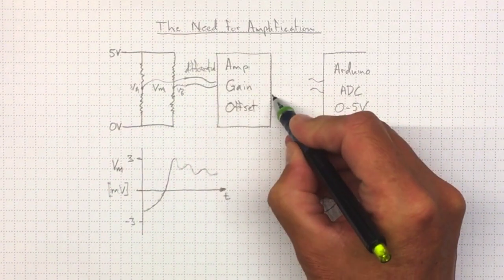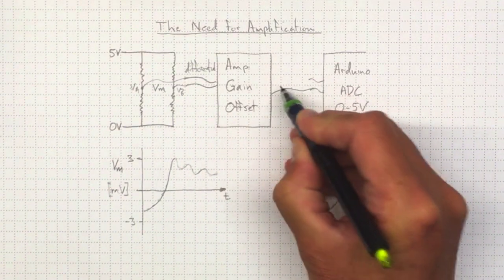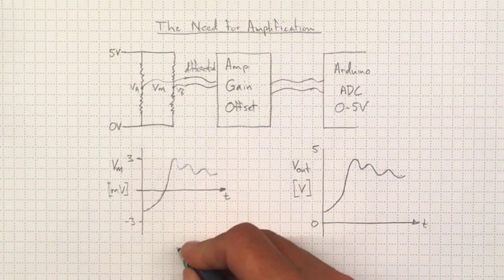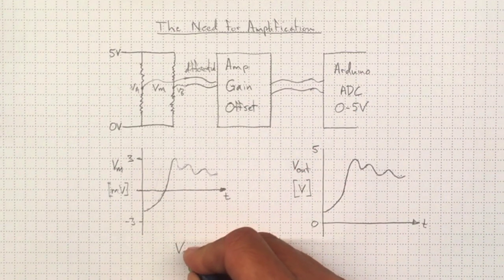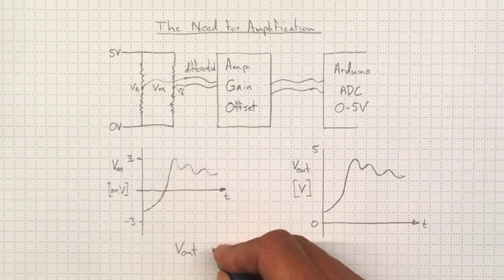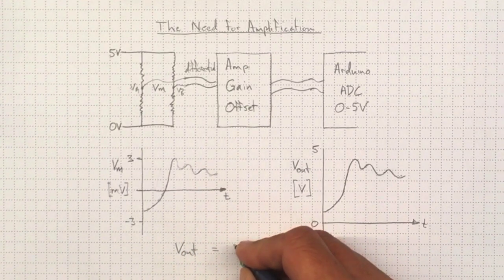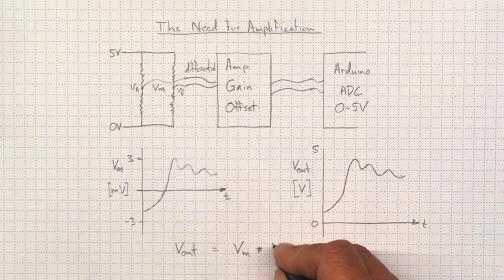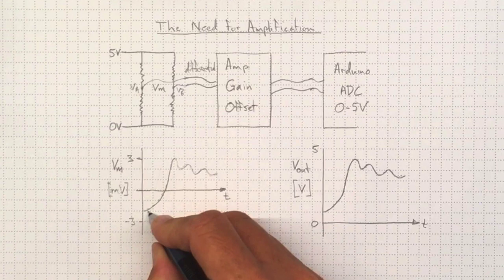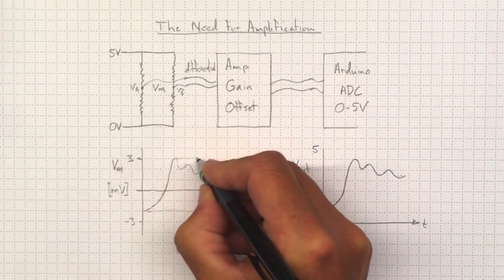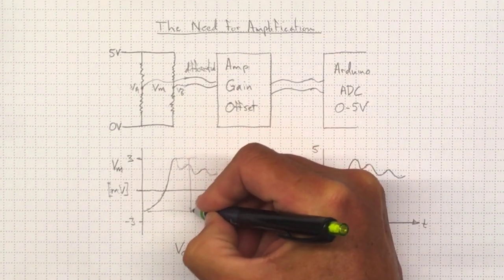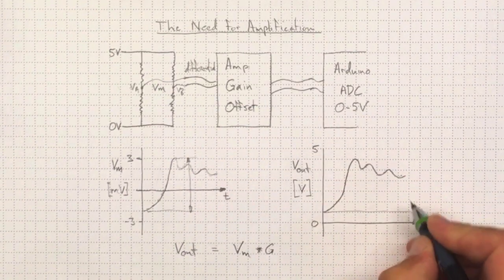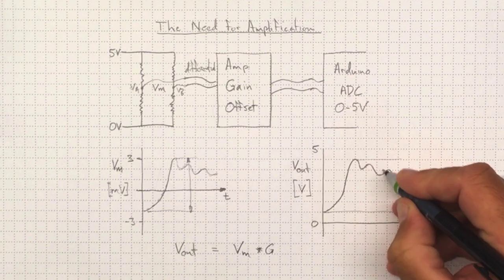...and turn it into an output voltage that's got the characteristics that we want. And we'll talk about the output voltage as being equal to the input voltage, the measured voltage times the gain. So that'll take this small voltage here and make it into this much larger voltage difference here.